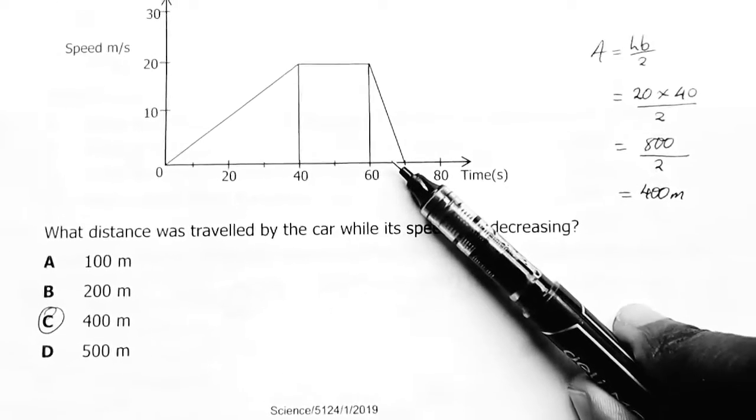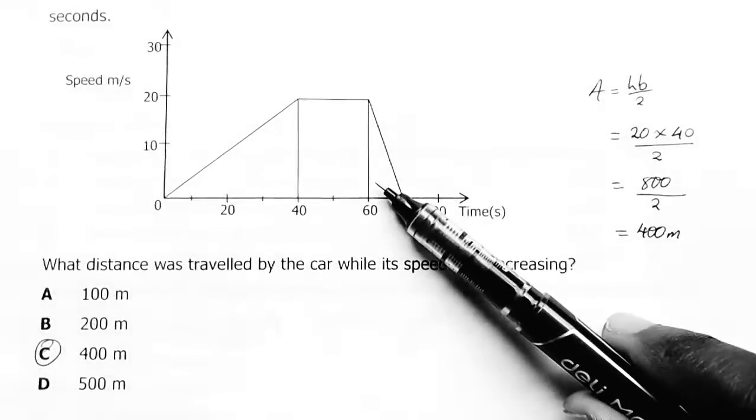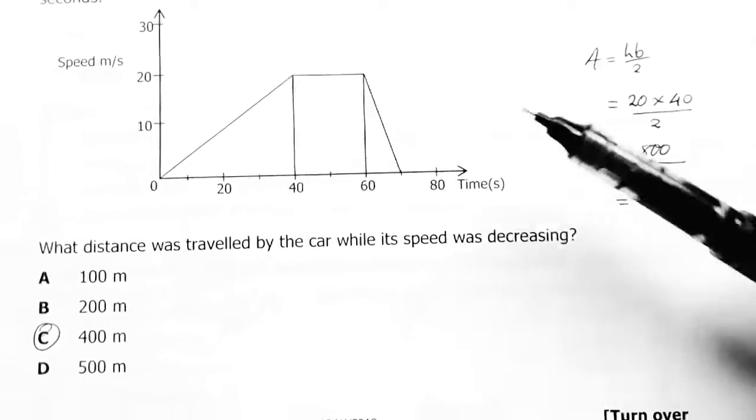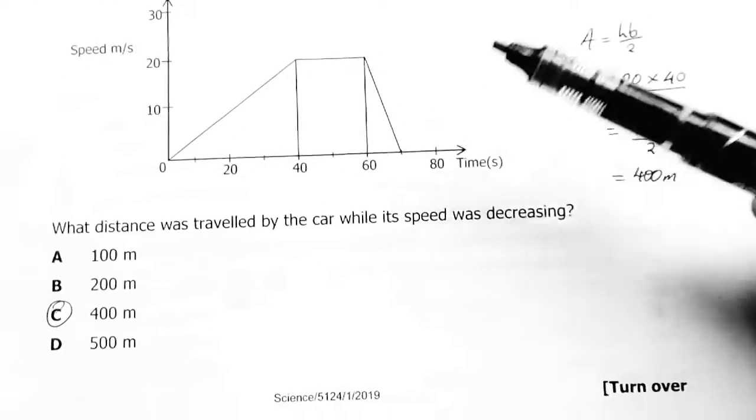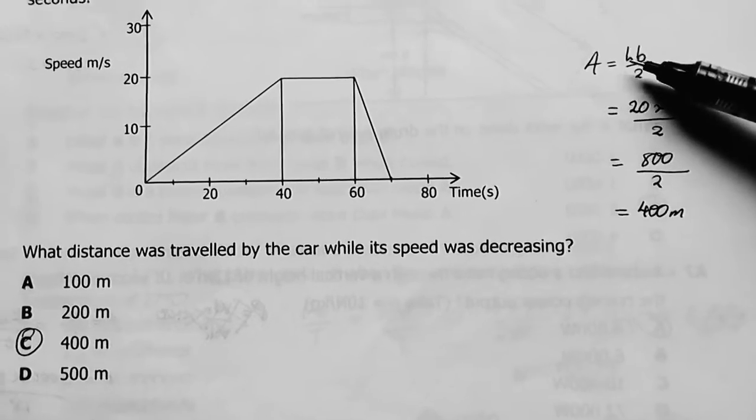Decreasing, meaning it's this triangle here. Did I do the right thing? So the formula for the area of this triangle is the distance this car moved while the speed was decreasing.